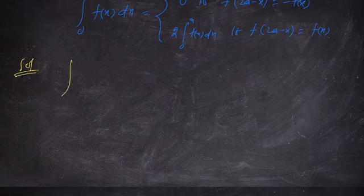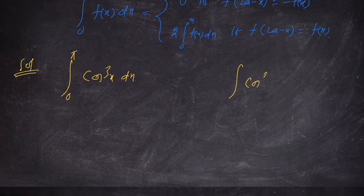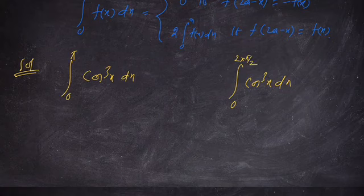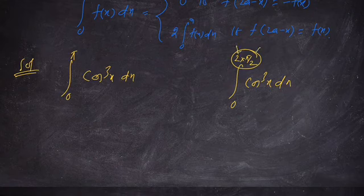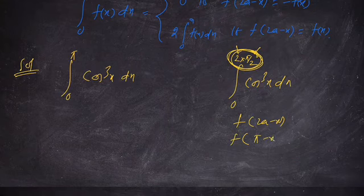This question is integration of cos cube x dx from 0 to pi. So we use the modified formula: cos cube x dx from 0 to 2 into pi by 2. So 2a equals pi, meaning a equals pi by 2. We check f of 2a minus x, which is f of pi minus x.